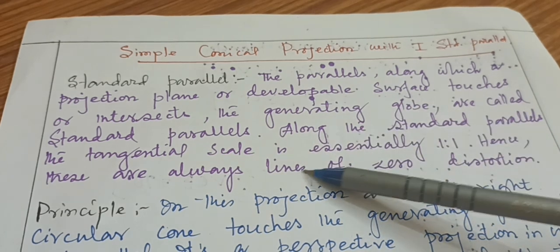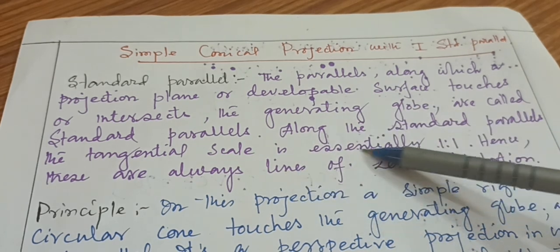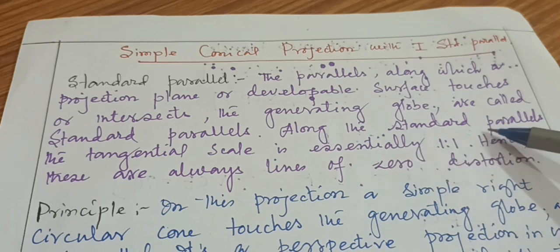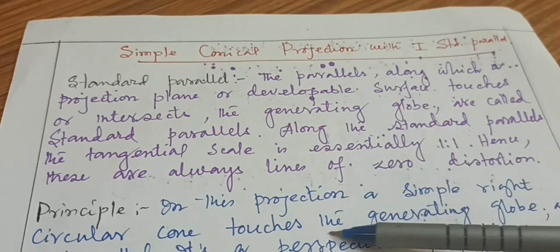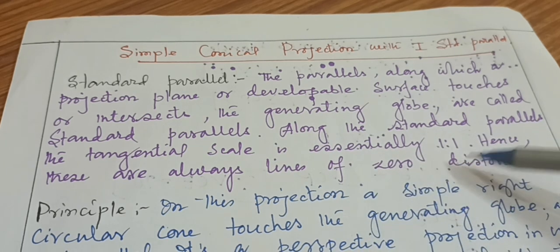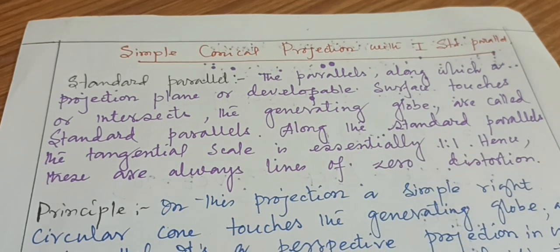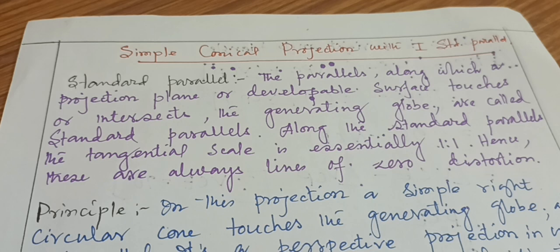Along the standard parallel, the tangential scale is essentially 1:1 and these are always the lines of zero distortion. The tangential scale is the scale factor found along the standard parallel.